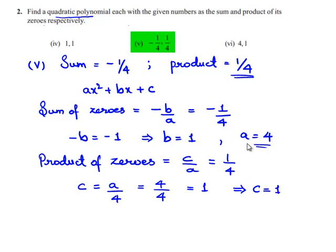Finally we found the value of A as 4, B as 1 and C as 1. So let us substitute the values of A, B and C in Ax square plus Bx plus C. Then we will be getting 4 times x square plus 1 times of x plus 1 which is nothing but 4x square plus x plus 1. Hence the required quadratic polynomial is 4x square plus x plus 1.